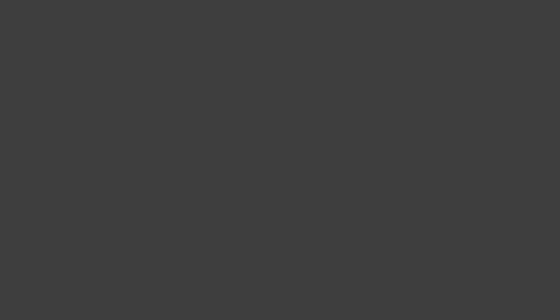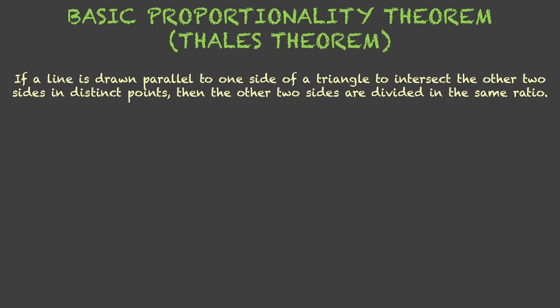This is nothing but basic proportionality theorem. It's also known as Thales theorem. It says that if a line is drawn parallel to one side of a triangle, to intersect the other two sides in distinct points, then the other two sides are divided in the same ratio.